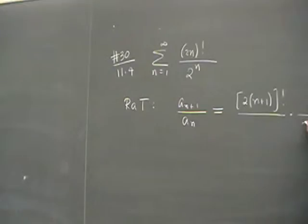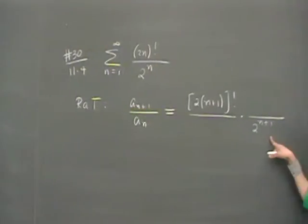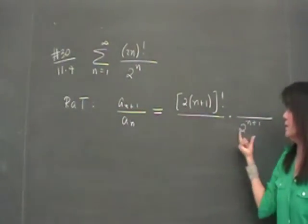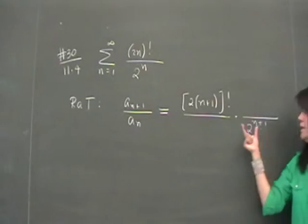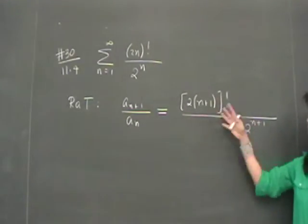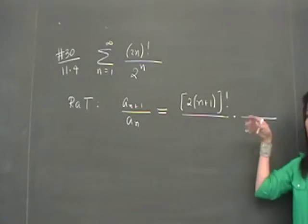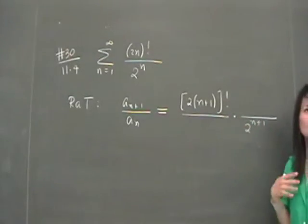Do you understand why I switched it over here? I explained this the other day. This is the a sub n plus 1. Instead of writing it here, I wrote it here because I'm trying to group like factors.